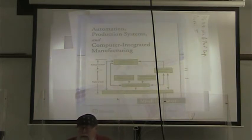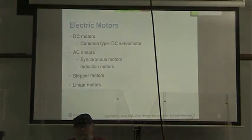And we're going to talk about electric motors. Essentially we have four kinds of electric motors. We have DC or direct current motors, and the most common type is the direct current servo motor. We have alternating current motors where we have synchronous motors and induction motors. And then we have stepper motors and linear motors.